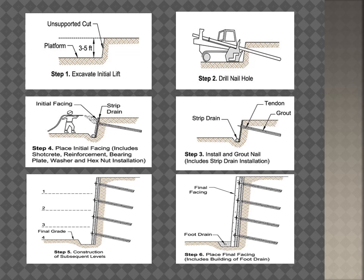This figure shows the six-step procedure for the construction sequence of soil nailing: step one — excavate initial lift; step two — drill nail hole; step three — install nail and grout; step four — place initial facing (shotcrete); step five — construction of subsequent levels; and step six — final facing is placed, with foot drains, weep holes, or drainage ditches provided for dewatering.